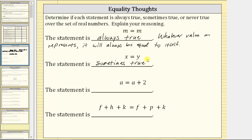For our reasoning, we will say: if x and y represent the same value, the statement is true. If x and y represent different values, the statement is false, which is the reason why the statement is sometimes true.